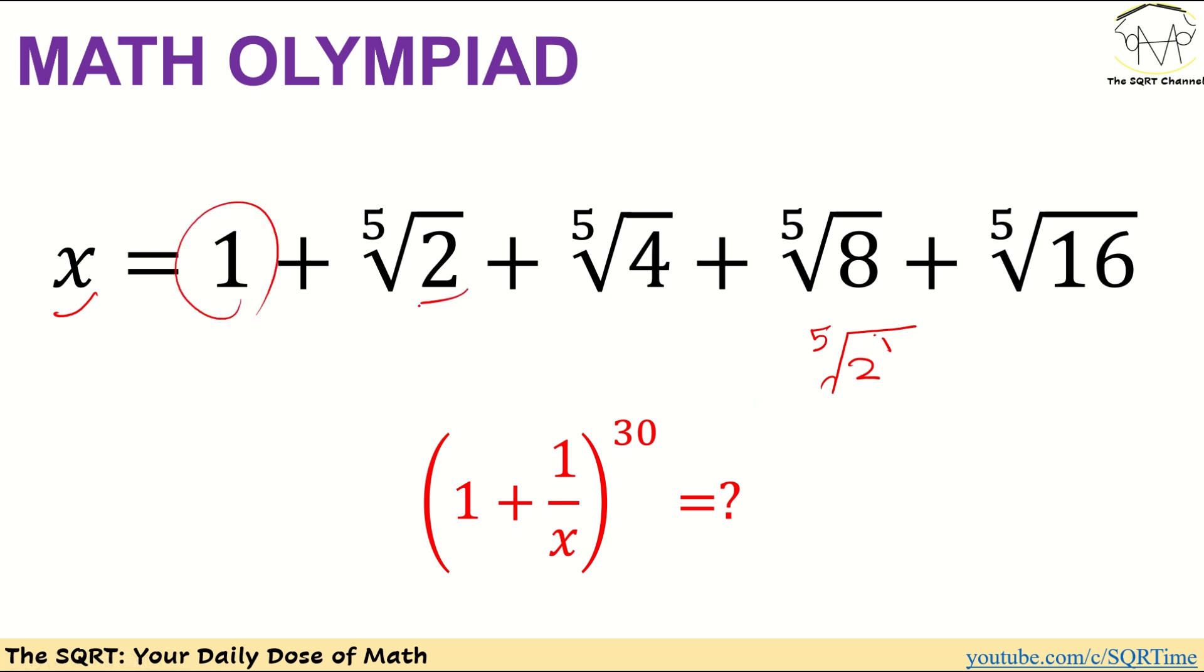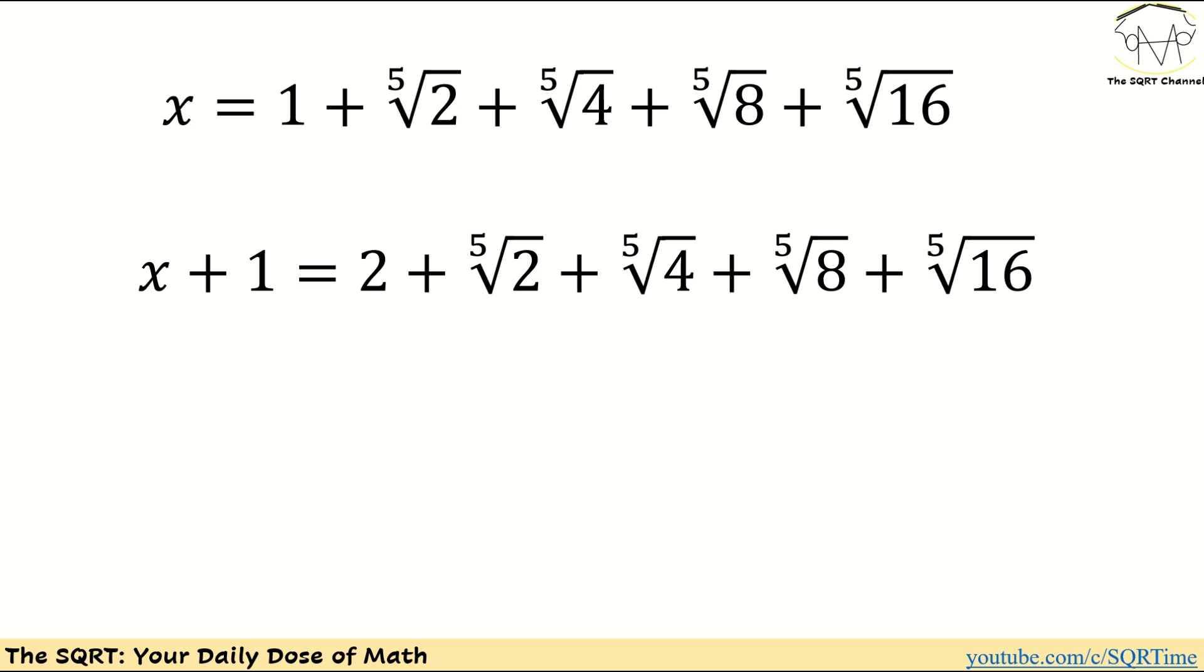i equal to two which is going to be four, and then we have eight and sixteen. As you see here, we are going to evaluate power of thirty of one plus one over x. Let's see how we are going to solve that. To solve this I'm going to add one to both sides of this equation.